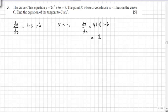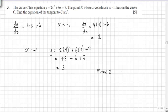Now, all we need is a coordinate. Because we have x equal to minus 1, we can find y by substituting it into the equation of the curve, which is 2 lots of minus 1 squared plus 6 lots of minus 1 plus 7, which gives us plus 2 minus 6 plus 7, which gives us a y-coordinate of 3. We therefore have the gradient of the tangent as being 2 and the coordinate of the tangent crossing the curve as being minus 1, 3.